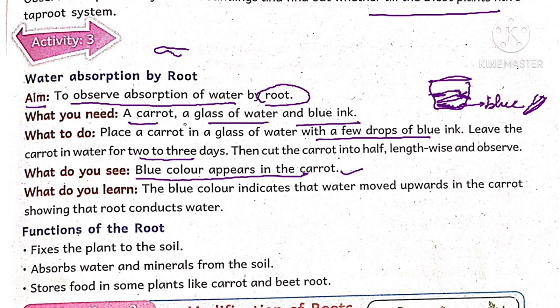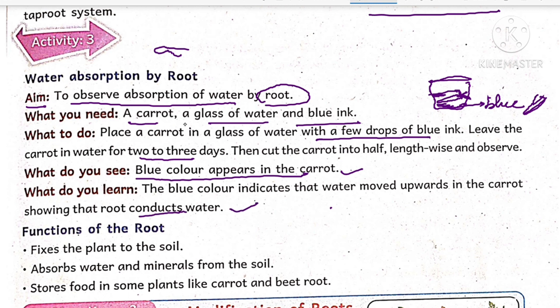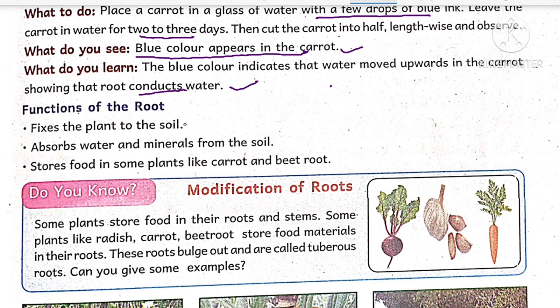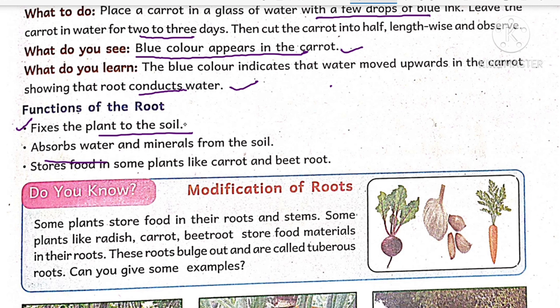The blue color indicates that water moves upwards in the carrot, showing that the root conducts — that is, transports — water. The main function of the root is to absorb water and minerals from the soil and transport them to the stem. The root also fixes the plant to the soil and stores food in some plants like carrot and beetroot.